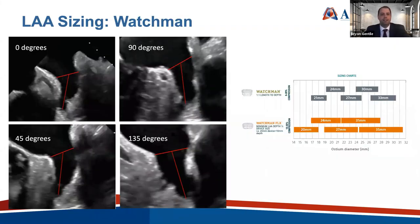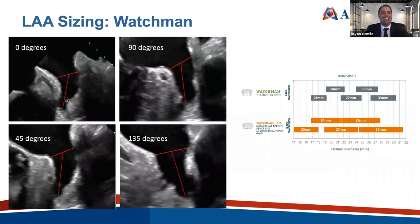Now we've entered the procedure for left atrial appendage occlusion and will begin sizing. For Watchman sizing, we size at four different angles: 0, 45, 90, and 135 degrees. I obtain what I find is a comfortable landing zone — the classic teaching is at the level of the circumflex artery, one to two centimeters distal to the atrial ridge. I measure into the deepest part of the appendage, which was more important for the Watchman 2.5 than for the Flex. There are sizing charts with overlap for both 2.5 and Flex to help decide which device to use.